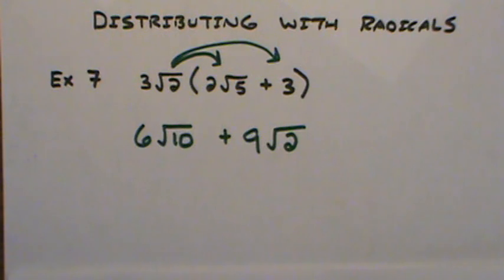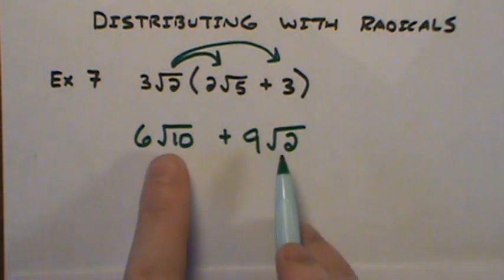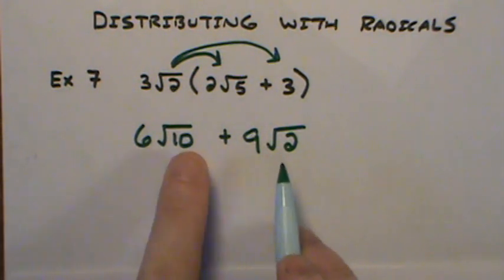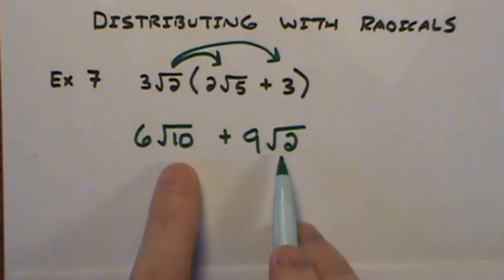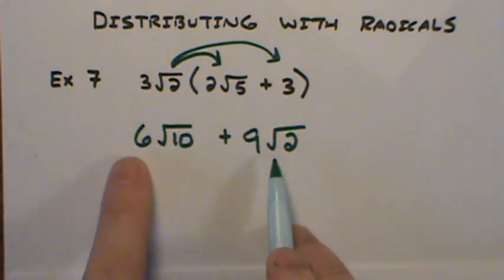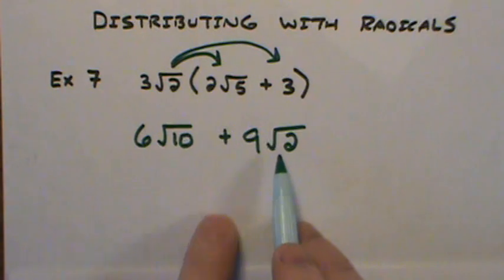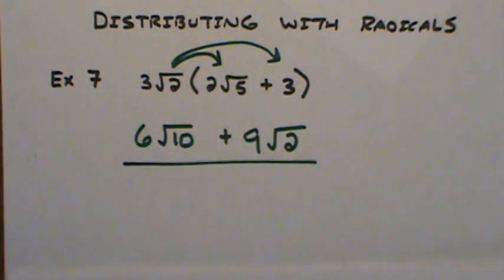Now this goes back to the homework you did the other day. You then look at this because you're adding radicals. If they're like radicals, you're allowed to add them together. If they're different, it's like having two different variables. So my final answer here, since these are different, would be 6√10 plus 9√2. That's all I can do with this problem.